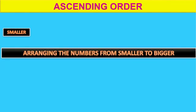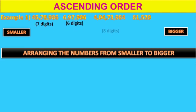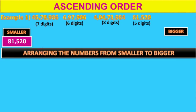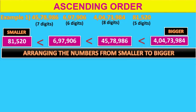Ascending order is arranging the numbers from smaller to bigger. Count how many digits are in each number: 7 digits, 6 digits, 8 digits, 5 digits. Therefore, the given set of numbers has different numbers of digits. The number with the fewest digits, 81,520, will come in first place. Then the 6-digit number, 6,97,906, in second place. Then 45,78,986 in third place and 4,473,984 in fourth place.